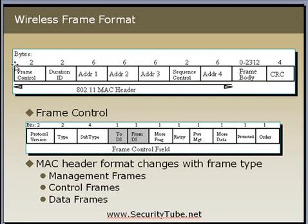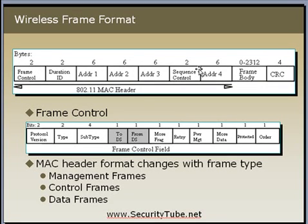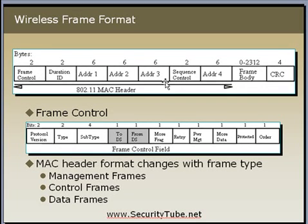The first two bytes are the frame control bytes. Next comes the Duration ID, followed by Address 1, Address 2, and Address 3. Each address is a 6-byte MAC address. I'll be explaining what exactly the frame control field is, what duration is, and what all these addresses are for. Next comes the sequence control field, and then there is one more optional address — Address 4. You will be able to see most frames with just the three addresses. After that comes the frame body.